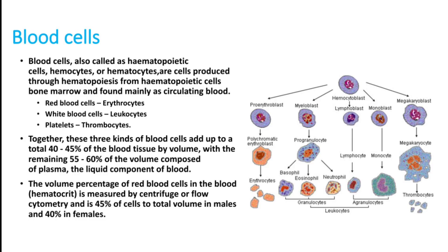You can see in the picture different types of blood cells: RBCs or erythrocytes, and WBCs including basophils, eosinophils, neutrophils, lymphocytes, and monocytes. Basophils, eosinophils, and neutrophils together are called granulocytes. Lymphocytes and monocytes together are called agranulocytes. All these together are called leukocytes or white blood cells.